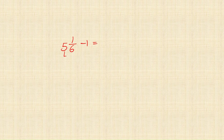Similarly, while subtracting a whole number from a mixed fraction, directly subtract from the whole number part of the mixed fraction. Here 5 minus 1 is 4. Write the proper fraction 1 upon 6 as is. The result is 4 and 1 upon 6.